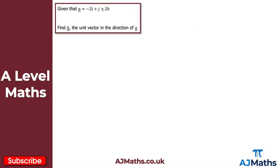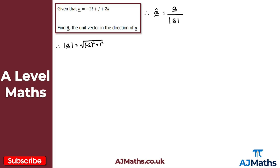Finally, question 3: we have vector a = -2i + j + 2k and we need to find the unit vector in the direction of a. Recall the formula: â = a / |a|. First we find the magnitude: |a| = √((-2)² + 1² + 2²) = √(4 + 1 + 4) = √9 = 3.